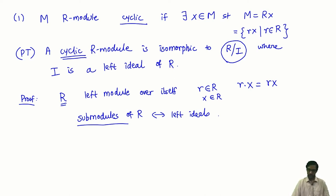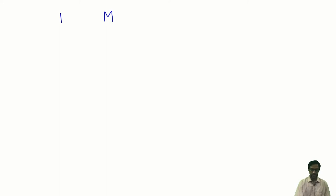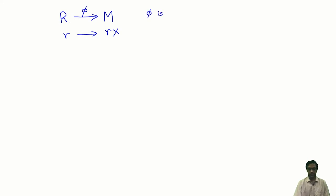The best way to prove this is to set up a homomorphism. We have a module M which is known to be cyclic, which means there is a single generator x. Let us define a map φ from R to M. To each element r of the ring, it associates the element rx, where x is the fixed generator of M. Both R and M are R-modules, so this is a homomorphism of R-modules.